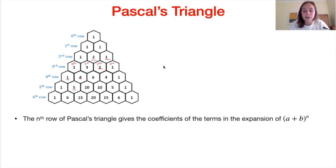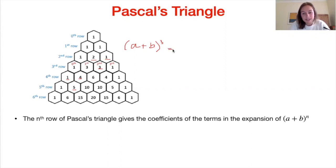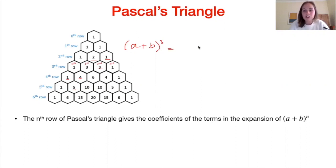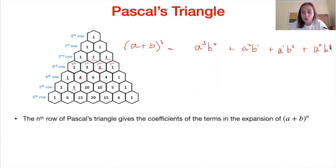The reason Pascal's triangle is useful for the binomial theorem is that the nth row of Pascal's triangle gives the coefficients of the terms in the expansion of (a+b)^n. Let's look at an example using (a+b)^3. When doing an expansion, we talk in increasing powers of a and decreasing powers of b, or vice versa. So our terms are: a³b⁰, then a²b¹, then a¹b², then a⁰b³. Pascal's triangle tells us the coefficients of all these terms.